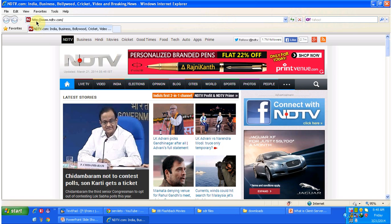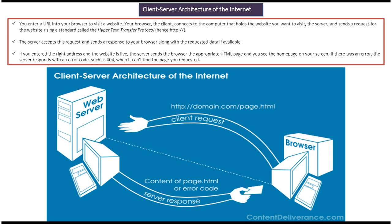The client uses Hypertext Transfer Protocol to send requests to the server. As you can see in this diagram, the browser sends a client request to the web server — in this case trying to access page.htm. The web server receives and processes the request and sends the content of page.html back to the browser, or it will send an error code if page.html is not present on the web server.